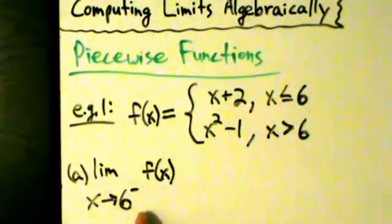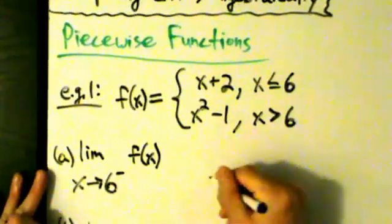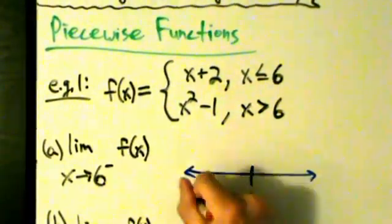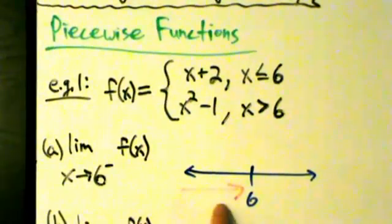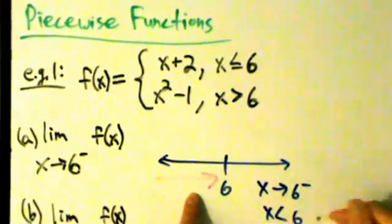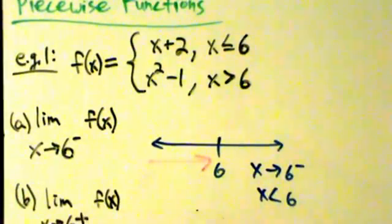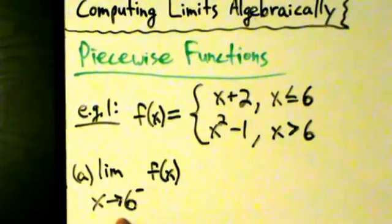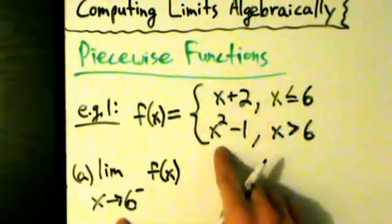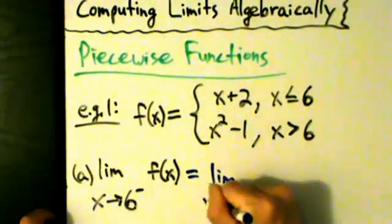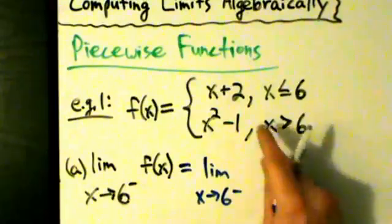The trick to remember is that this is the one-sided limit, so x is coming into 6 from the left, which means x is always less than 6. If we draw a number line, here's 6 — x comes in from the left, so x is always less than 6, never larger than 6, never equal to 6. That tells us which piece to use. Because x is always less than 6, we only look at the first piece, x plus 2, and ignore the second piece, which corresponds to x being larger than 6. So this equals the limit as x approaches 6 from the left of x plus 2.